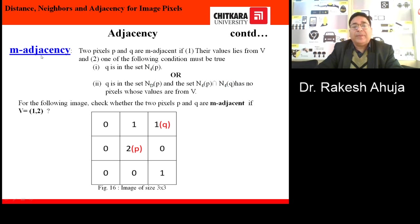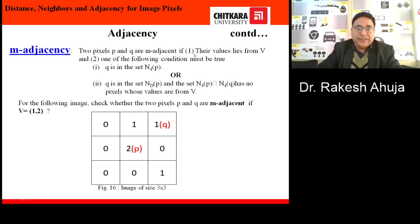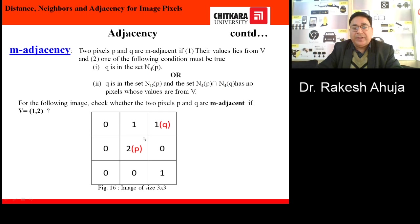Next, we will discuss m adjacency. Two pixels p and q are m-adjacent if: first, their values lie in V; and second, one of the following conditions must be true: either q is in N4(p), or q is in ND(p) and the intersection of N4(p) and N4(q) contains no pixels whose values lie in V.